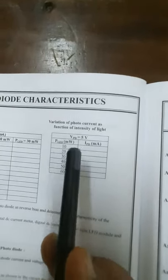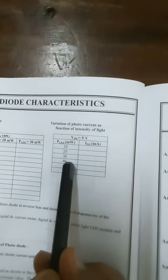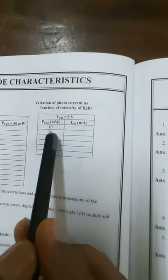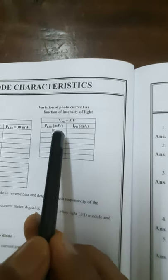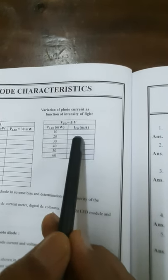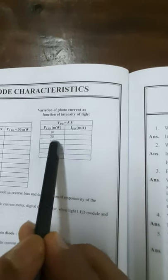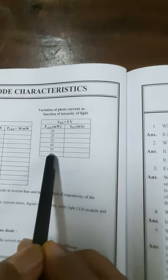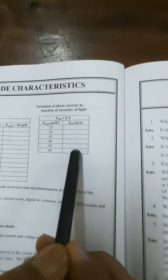You have to vary this power knob starting from 10 till 60 and exact current value should be copied into the tabular column. This is the tabular column. You have to enter the reading. 10 watt corresponding current, 20 corresponding current. Like this, starting from 10 to 60, you are increasing the power and corresponding current has to be plotted.